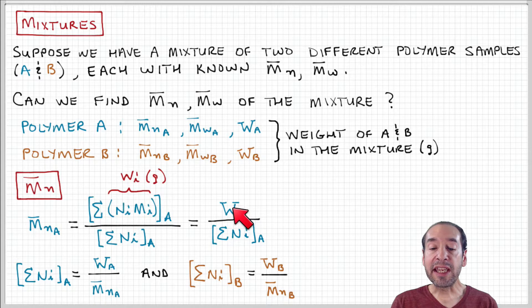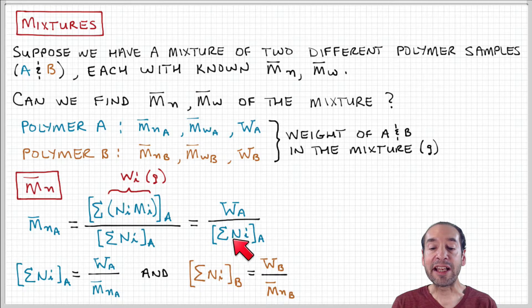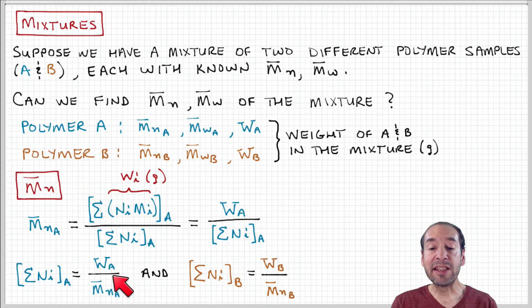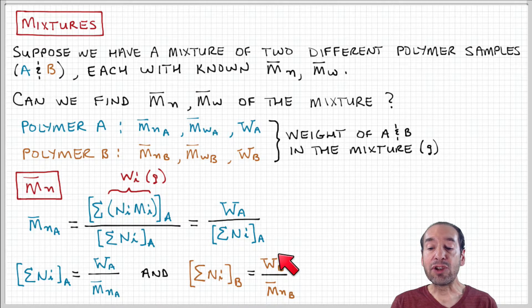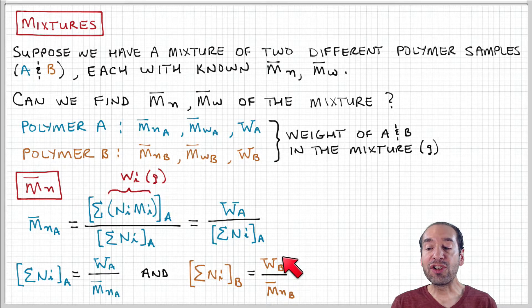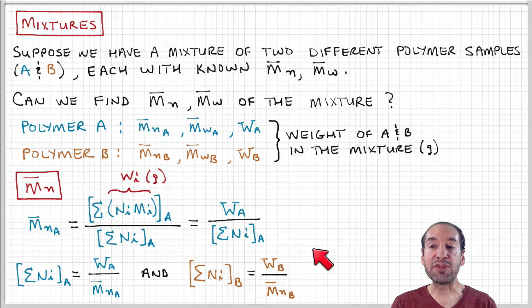I can rearrange this and solve for the total number of chains in sample A — I can express that as the ratio of the weight of sample A divided by its number average molecular weight. Similarly, I can do the same for sample B and express the total number of chains in sample B as the ratio between the weight of sample B and its number average molecular weight.